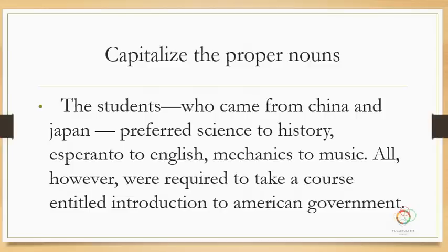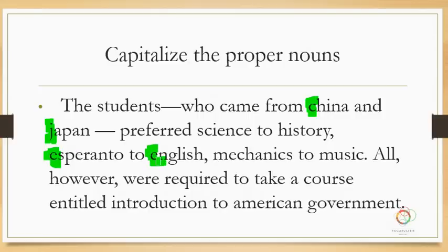Let's try another one. 'The students who came from China and Japan' — we have names of countries, so China and Japan need to be capitalized. They 'preferred science to history' — these are just generic subject matters, so no capital is needed. But Esperanto is a language and English is a language, so Esperanto and English both need to be capitalized. Mechanics and music are generic subjects, so we won't capitalize them.